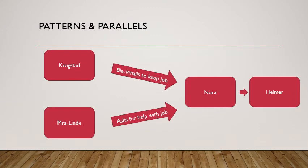Another interesting parallel: both Krogstad and Mrs. Linda are in a similar relationship to Nora — both are trying to get her to help them in connection with Helmer. Krogstad is blackmailing Nora to help him keep his job, while Mrs. Linda asks for help because she's in an unfortunate situation. Both need Nora to intervene with Helmer, but through very different means — blackmail versus an appeal to pity. Notably, Helmer agrees to give Mrs. Linda a job but refuses Nora's request to help Krogstad, which becomes a complication for Nora as the play continues.